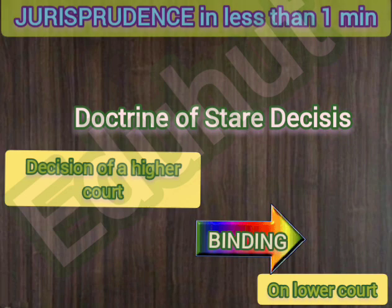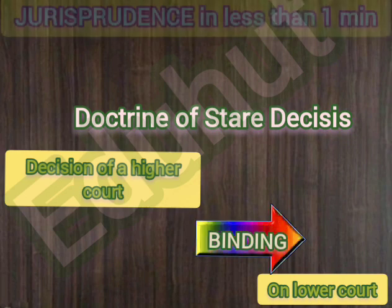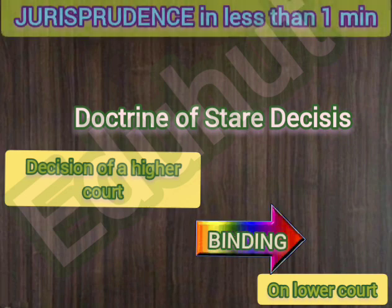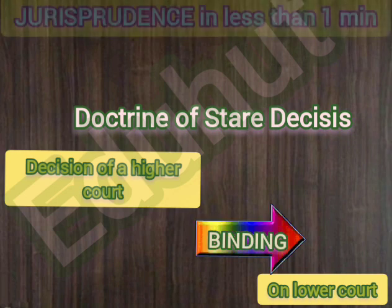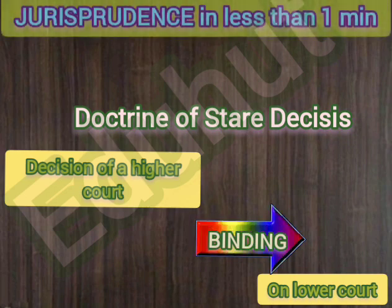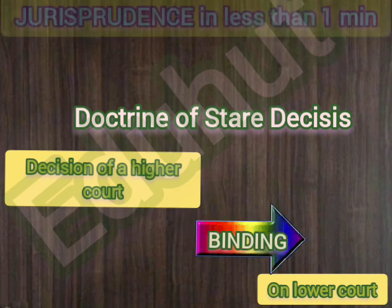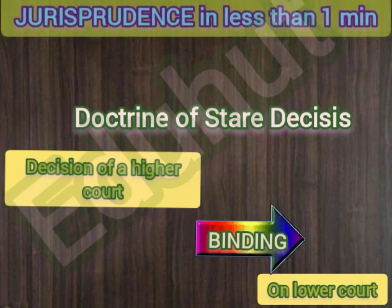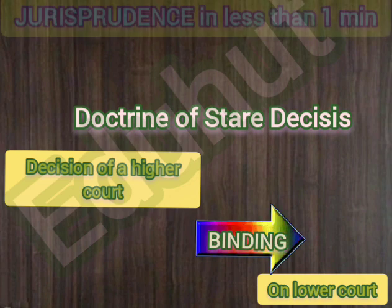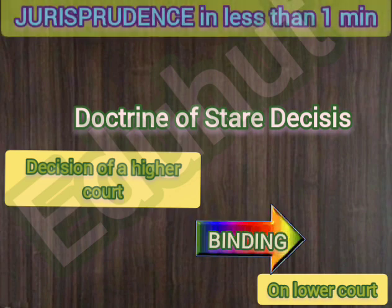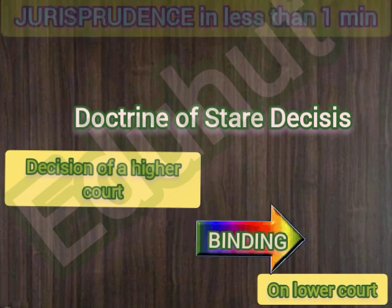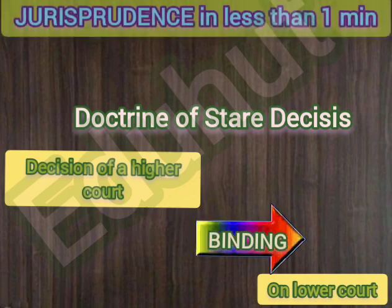In India, the doctrine of stare decisis is followed under Article 141 of the Indian Constitution, which states that the decision of the Supreme Court is binding on all other subordinate courts.